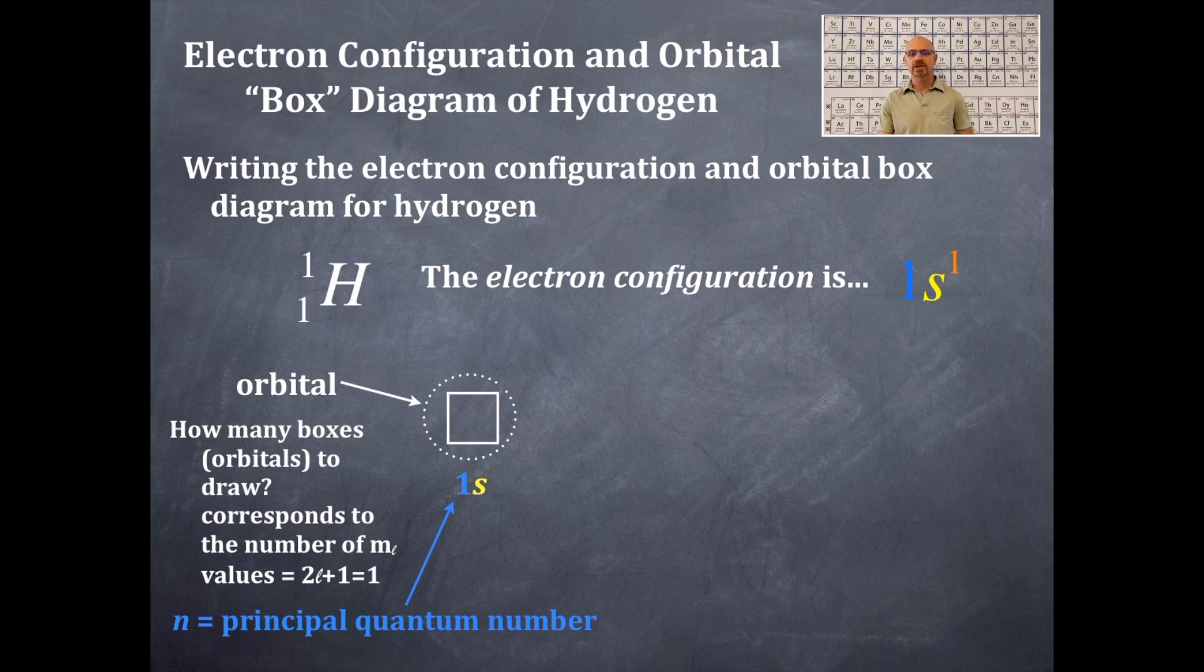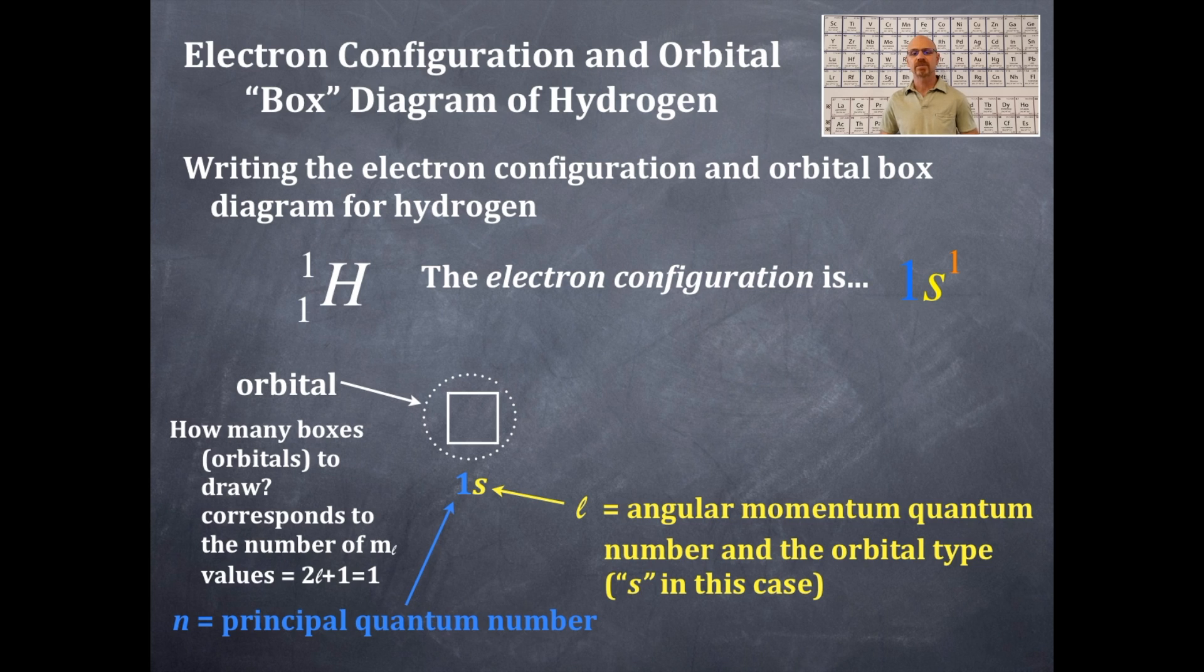And so there's our principal quantum number. That's our angular momentum quantum number. And that is an l value of 0. Remember, that corresponds to an s-type orbital. So we don't write 1, 0. It's 1s.